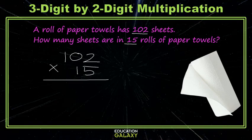We start with 102 times 5. 2 times 5 is 10, carry the 1. This is 0 times 5 is 0, with the 1 we carried. 1 times 5 is 5.